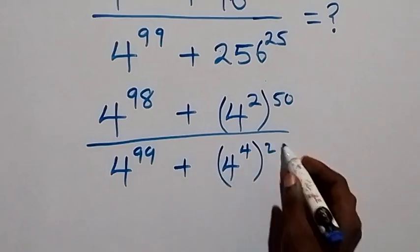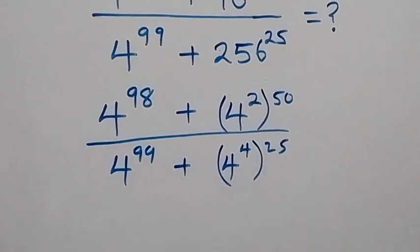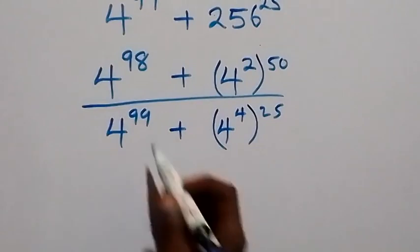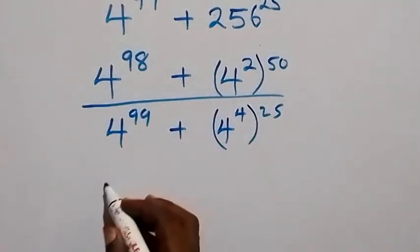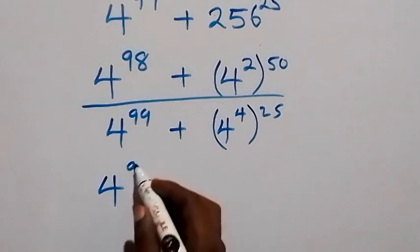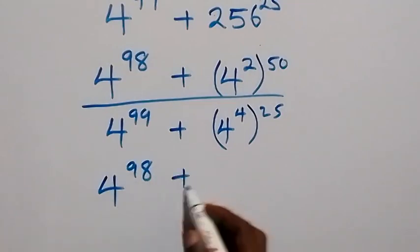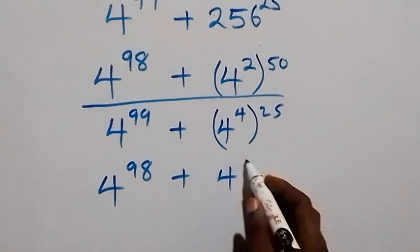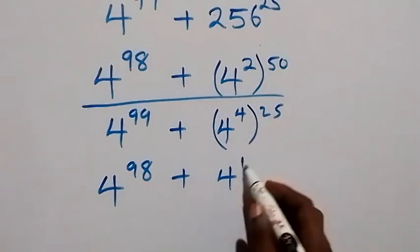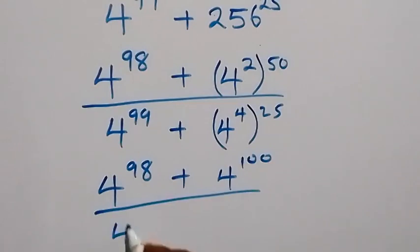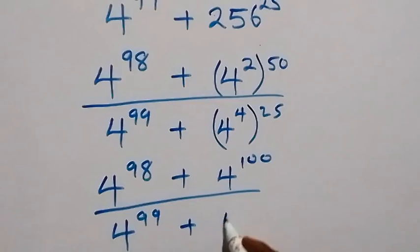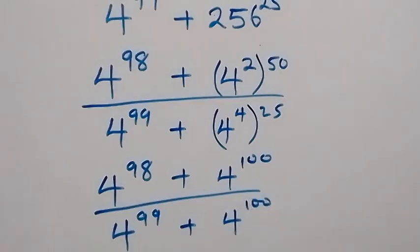From here, from the law of indices we multiply the powers, and we have 4 raised to power 98 plus 4 raised to power 100, divided by 4 raised to power 99 plus 4 raised to power 100.